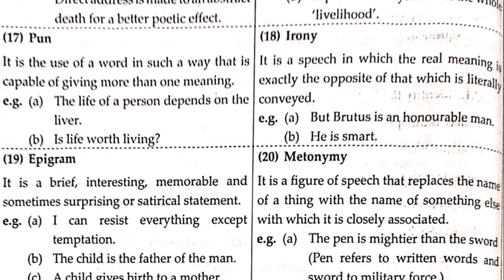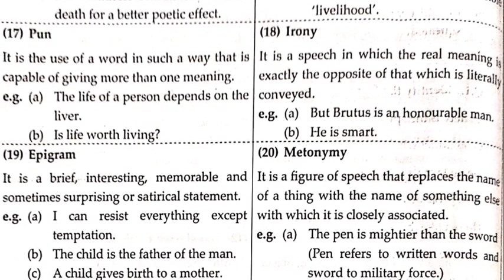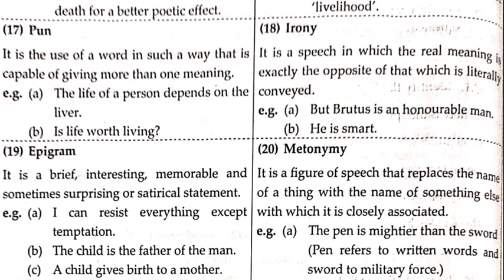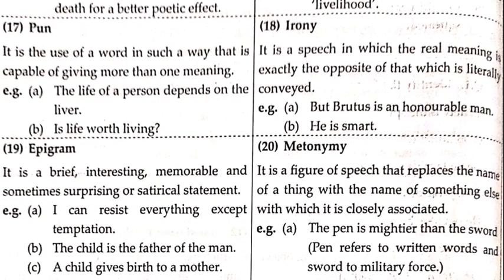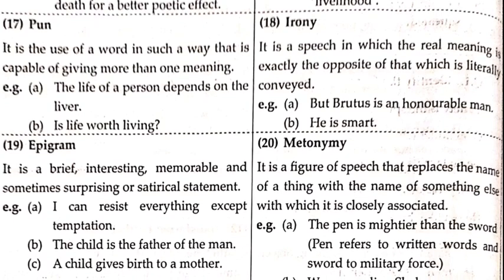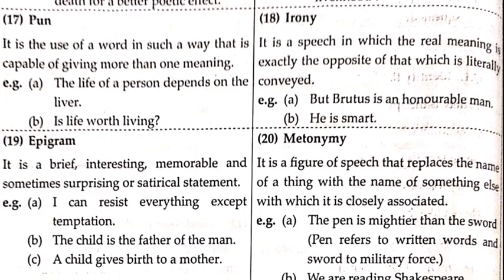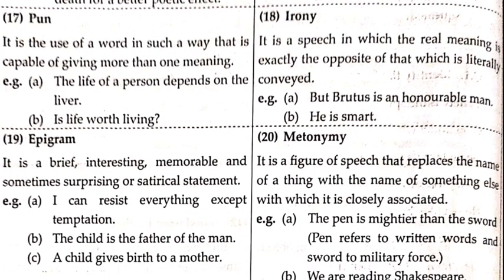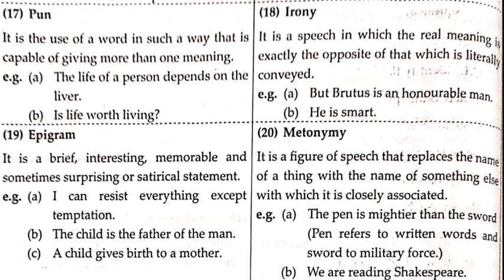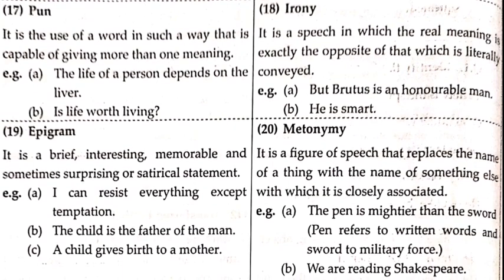Irony is a figure of speech in which the real meaning is exactly the opposite of that which is literally conveyed — literally, the opposite meaning is written. Example: 'But Brutus is an honorable man.' Here, Brutus is called honorable but he was not. Second: 'He is smart' — he might not be smart but it is conveyed that he is. These types of sentences denote irony.